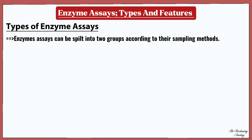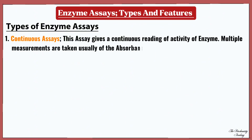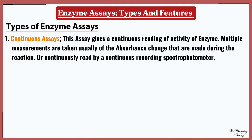Enzyme assays can be split into two groups according to their sampling methods: continuous assay and discontinuous assay. In the continuous assay, the assay gives a continuous reading of the activity of the enzyme, meaning multiple measurements are taken — usually absorbance changes made during the reaction, continuously read by a recording spectrophotometer. Continuous assays are the most convenient, with one assay giving the rate of reaction with no further work necessary.